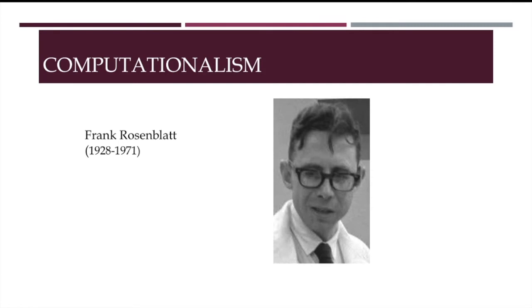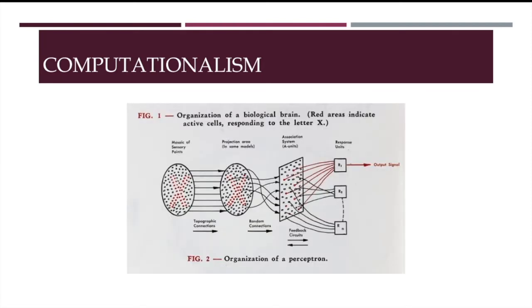Later on, psychologist Frank Rosenblatt would develop the main idea of the McCulloch-Pitts neuron into what he called the perceptron. The perceptron is the next big chapter in the saga of biologically inspired computation. A perceptron already contains the elements of a neural network, but with a single layer of connections.